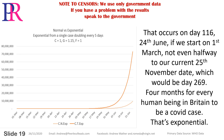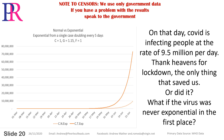That occurs on day 116 — the 24th of June, if we start on the 1st of March — not even halfway to our current 25th of November date, which would be day 269. Four months for every human being in Britain to be a COVID case. That's exponential. On that day, COVID is infecting people at the rate of 9.5 million per day. Thank heavens for lockdown — the only thing that saved us. Or did it?